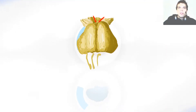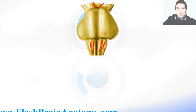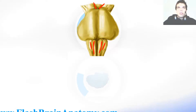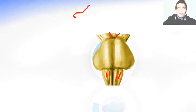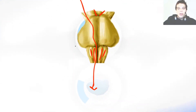Right below that, there are the pyramids of the medulla oblongata and the olivary body. So these are the pyramids, and this is the olivary body. The olivary body are the nuclei, and the pyramids are the elevations caused by the corticospinal tract. The corticospinal tract means it comes from the cortex of the brain, and then it goes to the spinal cord. That's why it's called the corticospinal tract.